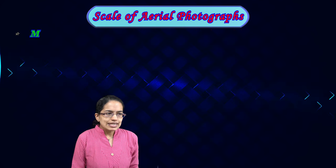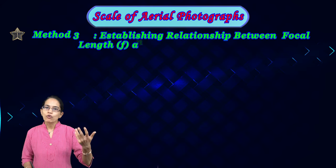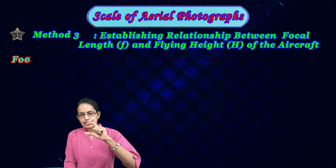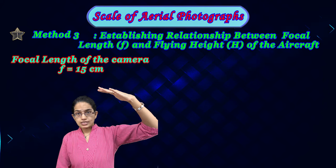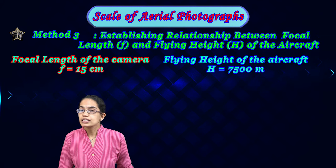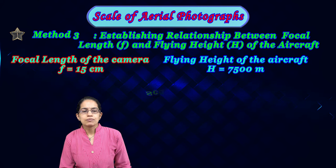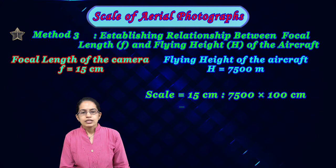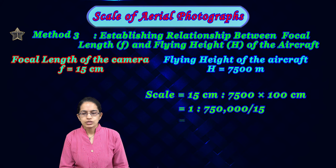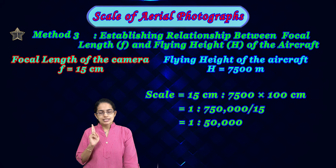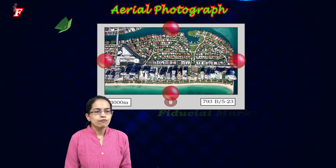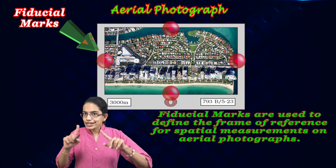The third method establishes a relation between focal length and flying height. For example: the focal length of the camera is 15 centimeters and the aeroplane is at a height of 7,500 meters above the ground. Converting 7,500 meters to centimeters gives 750,000 centimeters. The scale becomes 15:750,000, which simplifies to 1:50,000.